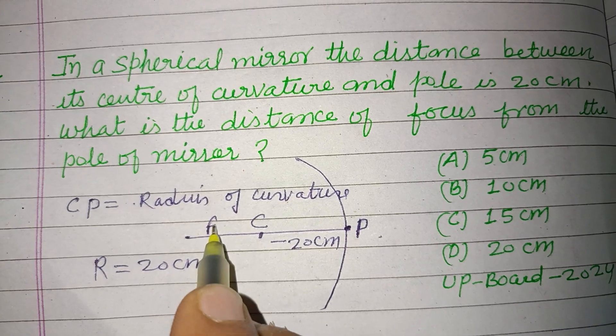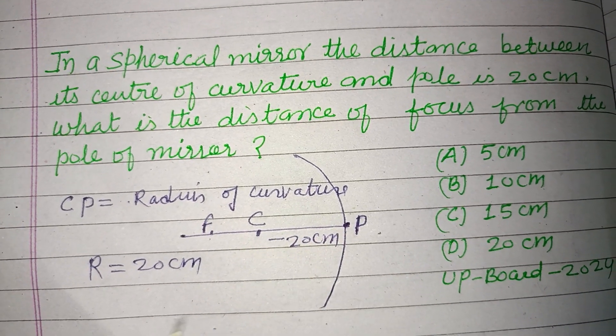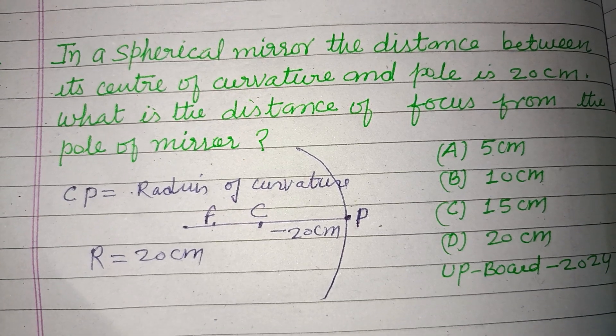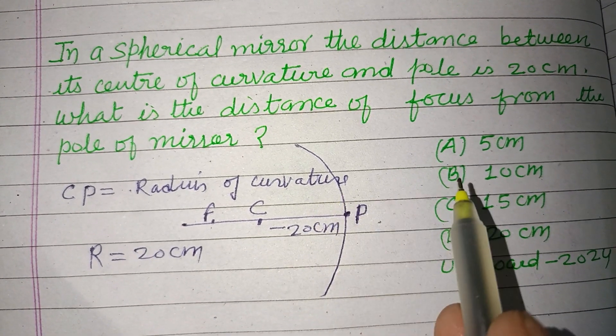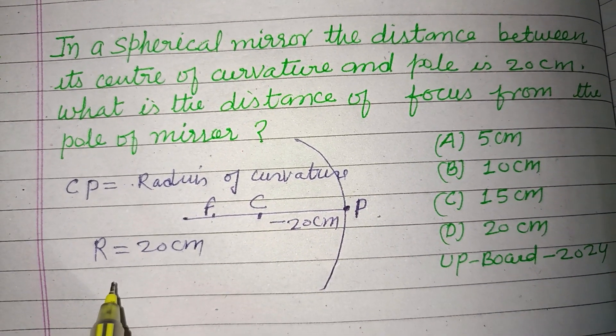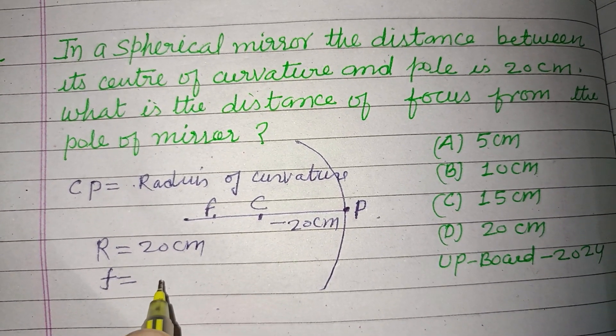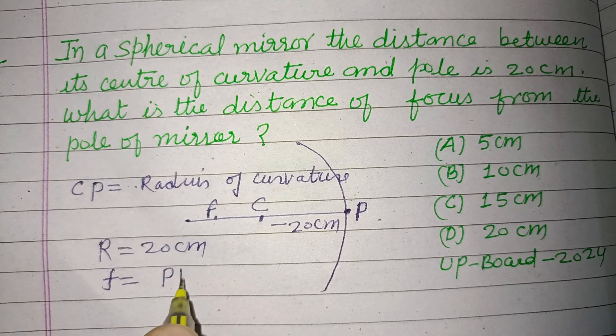The distance between focus and pole is being asked. What is the distance of focus from the pole? This distance between focus and pole is called the focal length.